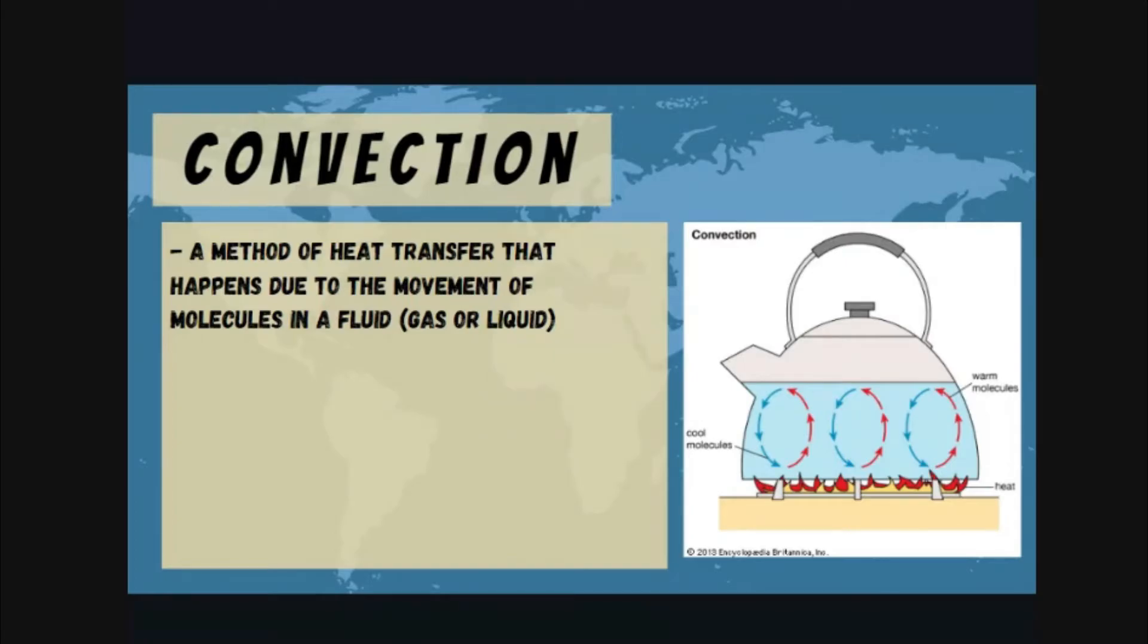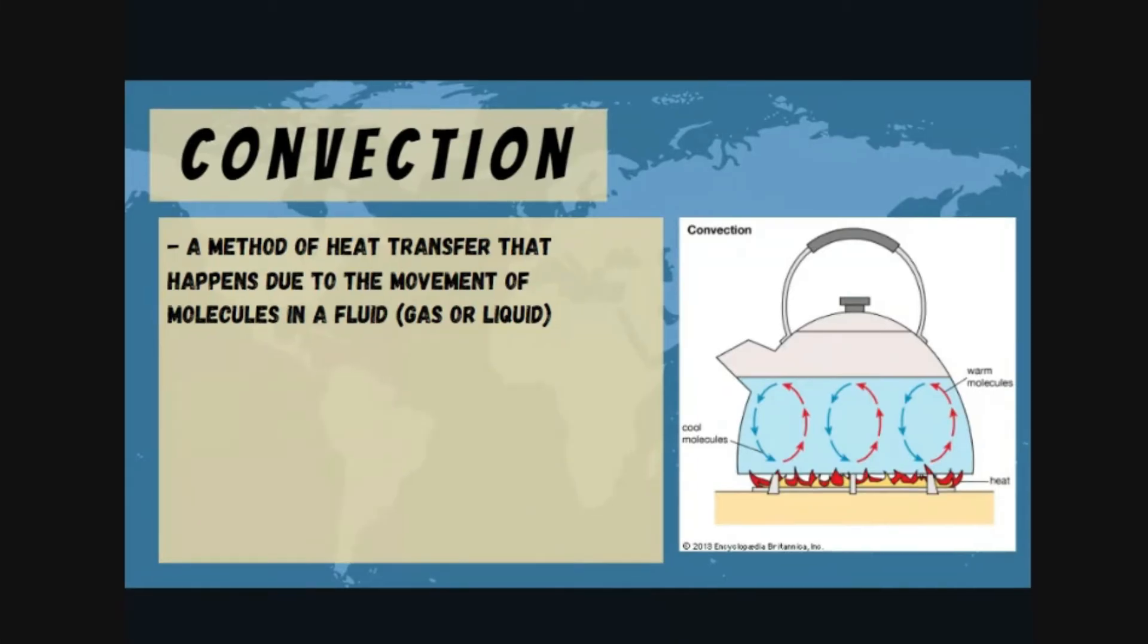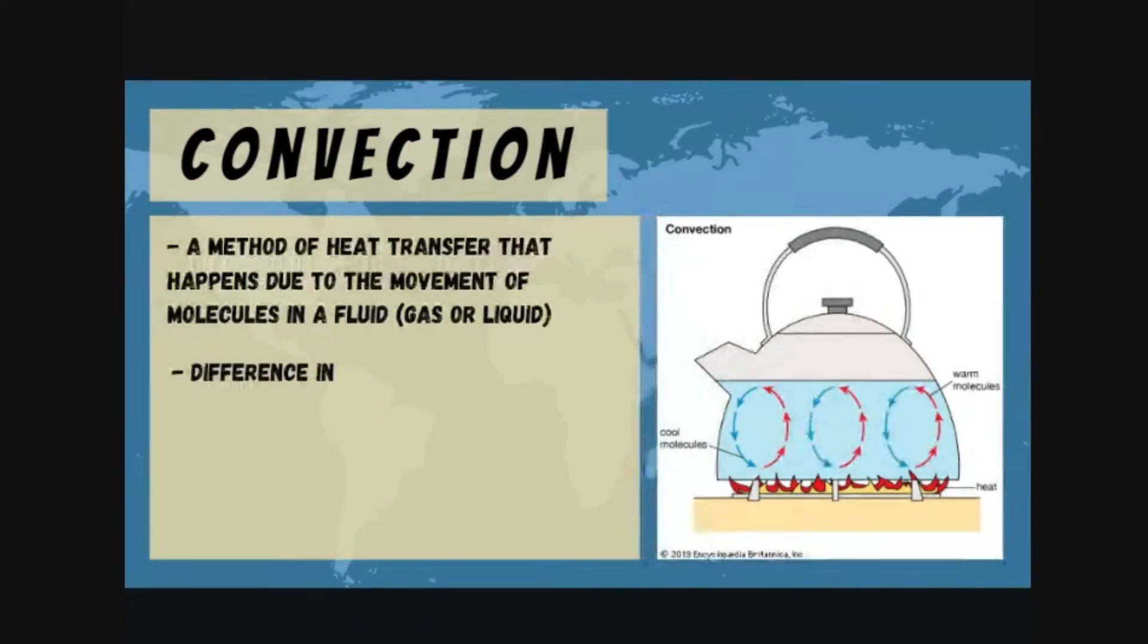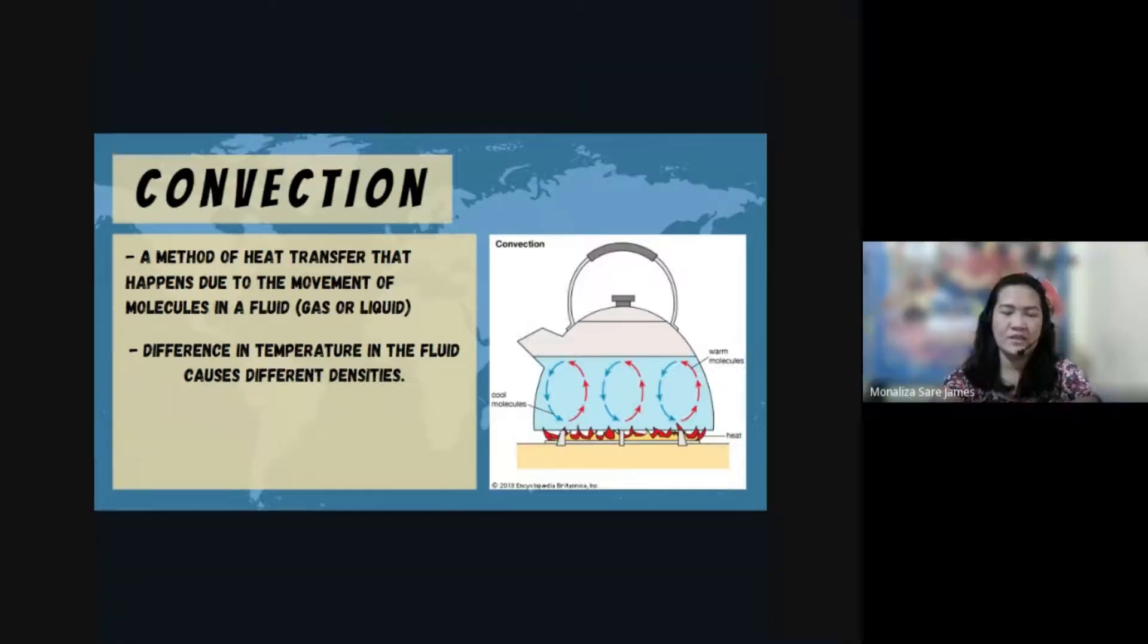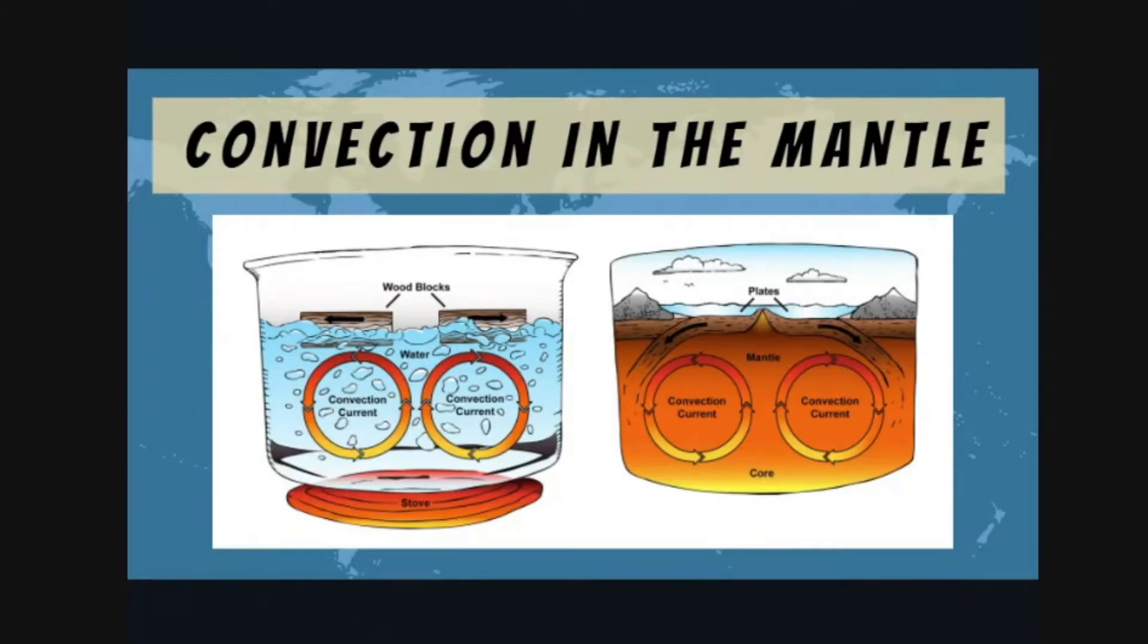When we say convection, it is a method of heat transfer that happens due to the movement of molecules in a fluid. This is a way of transferring heat because of the movement of molecules. Why do molecules move? This is because of differences in density. Difference in temperature in the fluid causes different densities.